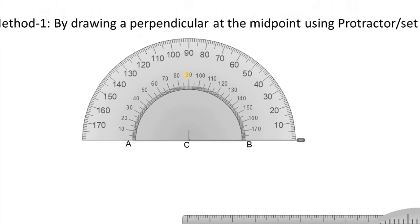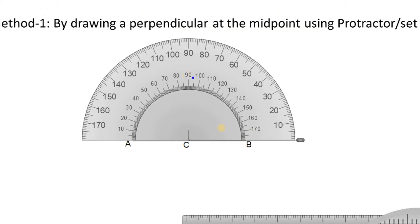You can see it. You see it here. It is center at C. The protractor is the center near zero edge. It is at C exactly. And the base of the protractor is aligned with the line AB.